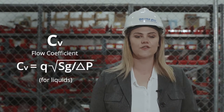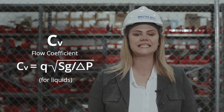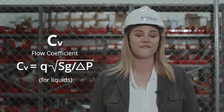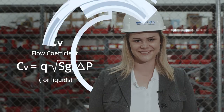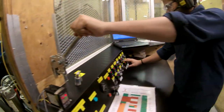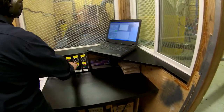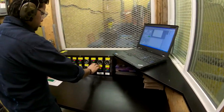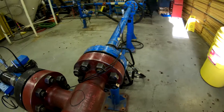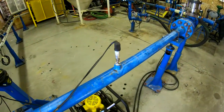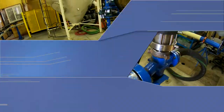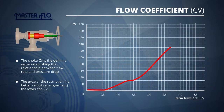To compare valve capacities and to size valves for specific applications, several coefficients are used. The first is the flow coefficient. Flow capacity testing establishes a flow curve over the valve travel and provides a basis for comparing trim styles. Each valve type has a unique curve based on internal geometry. A greater restriction provides better velocity management, but lowers the flow capacity.